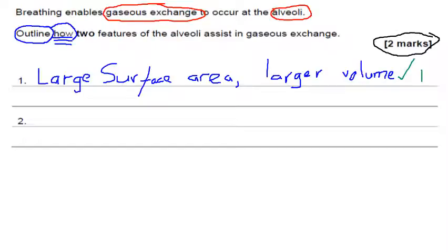What I'd like you to do is pause the video and think — preferably without looking at the answer card — about another feature that will assist in gas exchange at the alveoli, and how that feature will assist. Pause your video, have a go at writing in the second example, and then once you've done that press play.